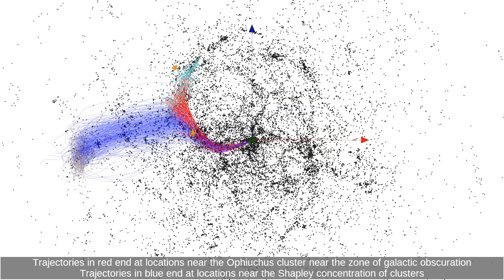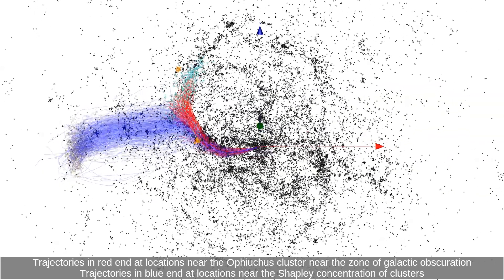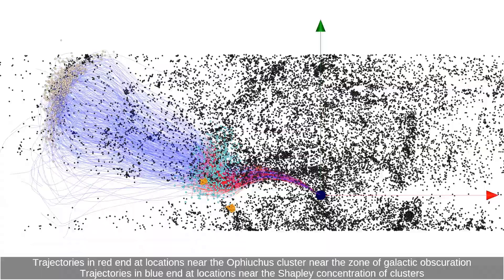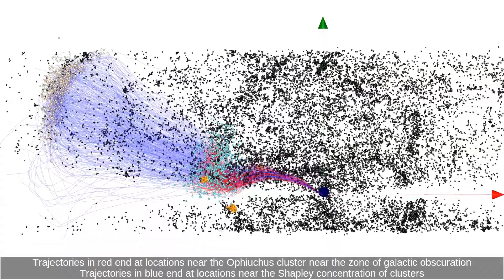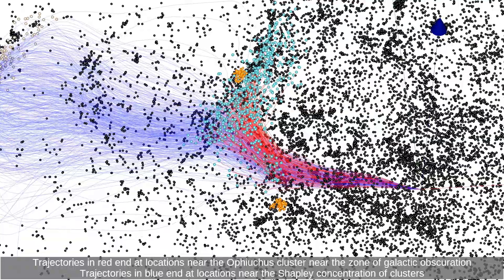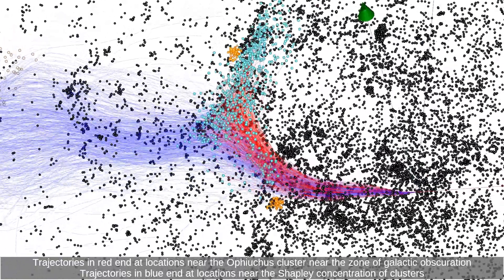Trajectories in red end at locations near the Ophiocos cluster near the zone of galactic obscuration. Trajectories in blue end at locations near the Shapley concentration of clusters.